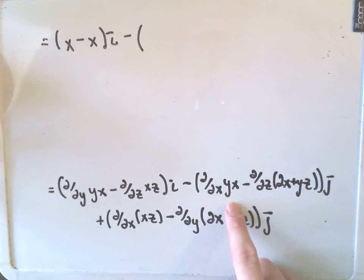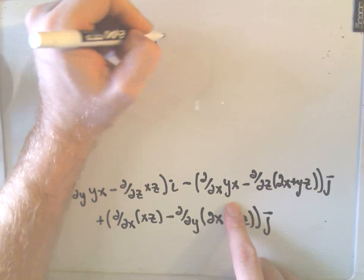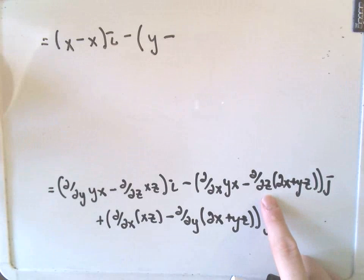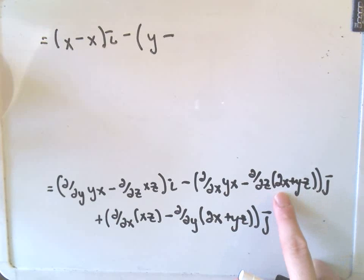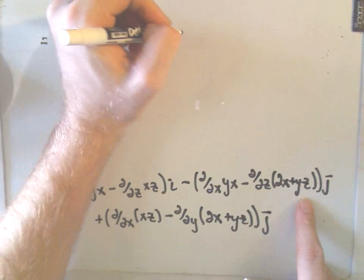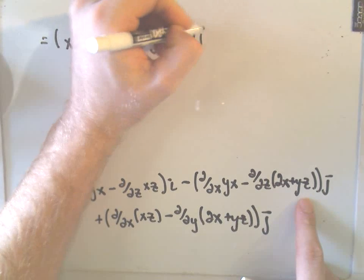Minus, if we take the partial with respect to x of yx, that simply gives us y. Minus, if we take the partial with respect to z of the 2x plus yz term, x is a constant, so that goes away. The derivative of the yz will simply be y. So, we have j.